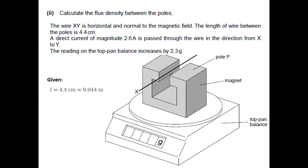First one, we have the length of the wire that's exposed to the magnetic field. Remember, we only need the length of the wire that's exposed to the magnetic field, not the whole length of the wire. And that length will be 4.4 centimeters or 0.044 meters.